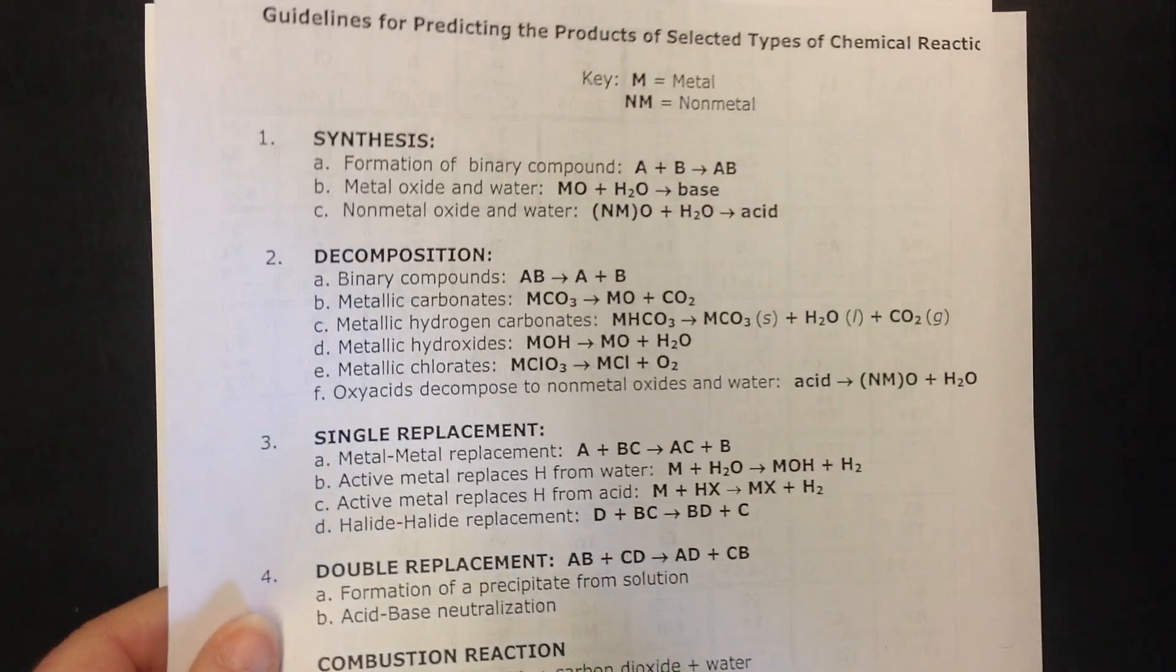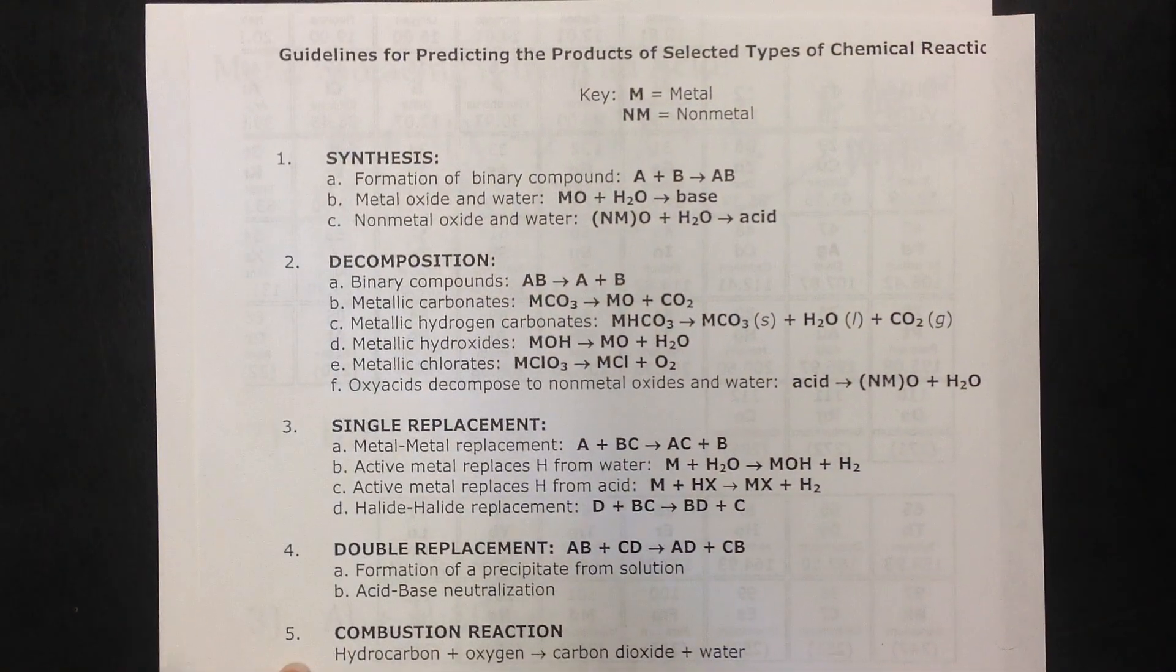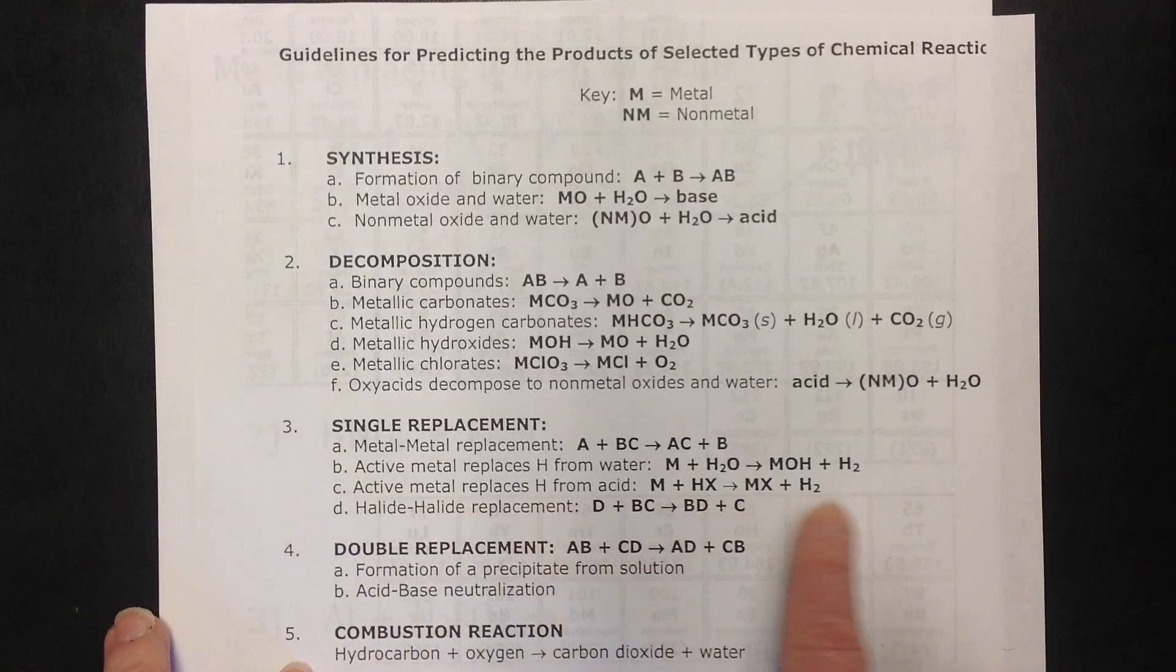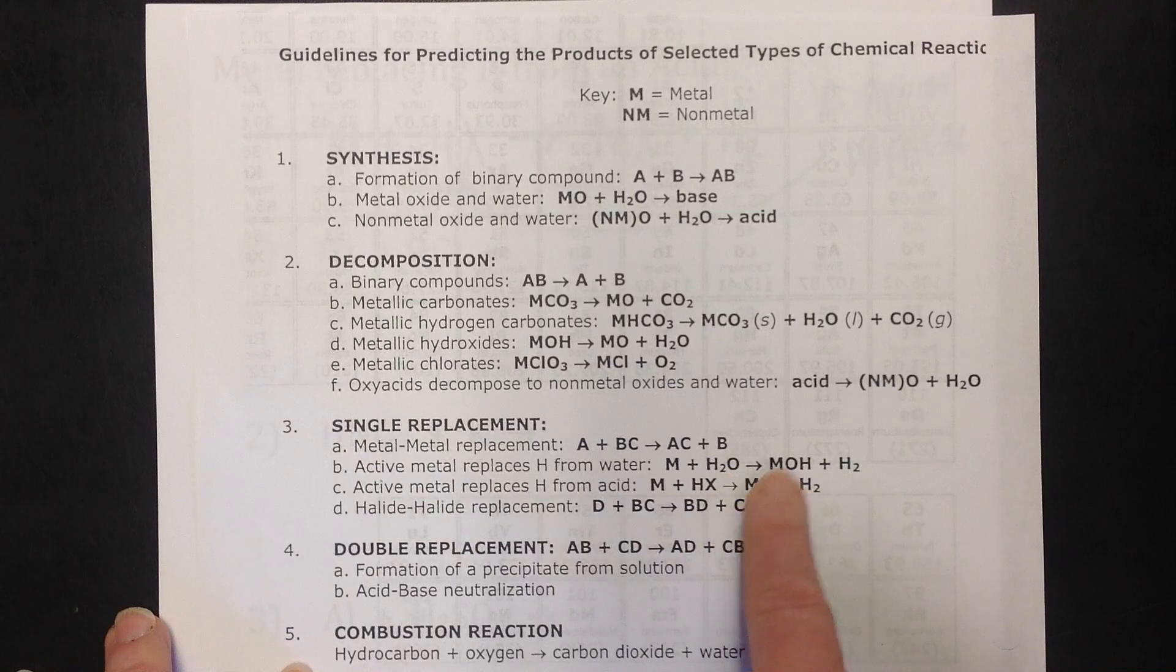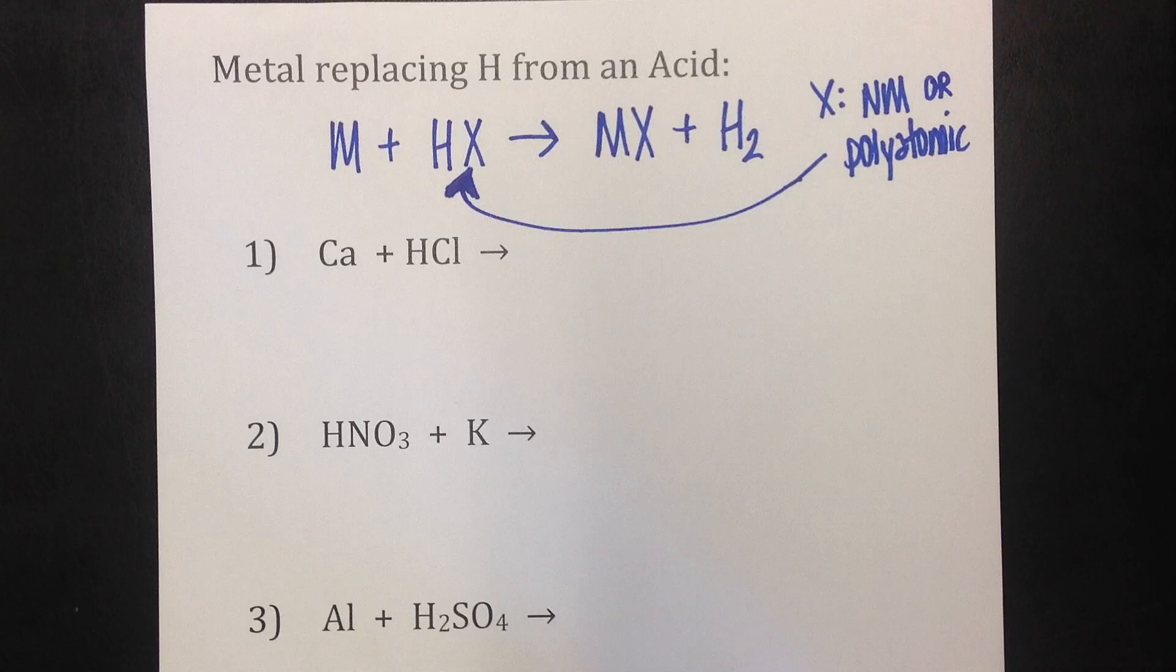I'll refer you to the reference table packet if you're using that. And you can see right here is our generic reaction, a metal with an acid. And remember, the X is just either a non-metal or a polyatomic ion. It tells us the metal crisscrosses with X, and we also get hydrogen gas.